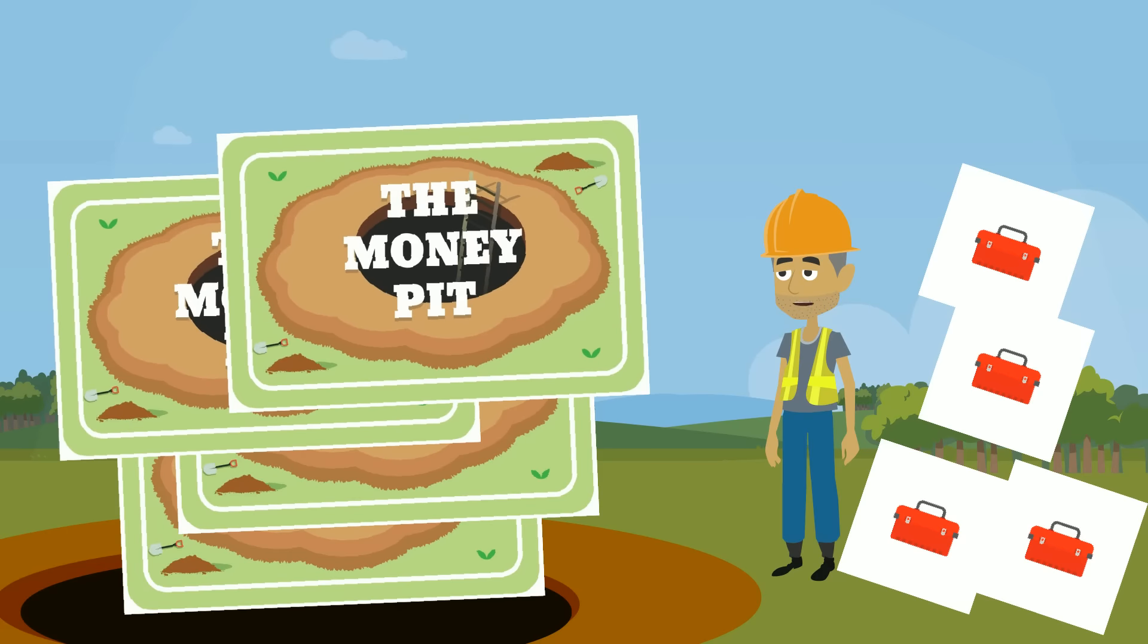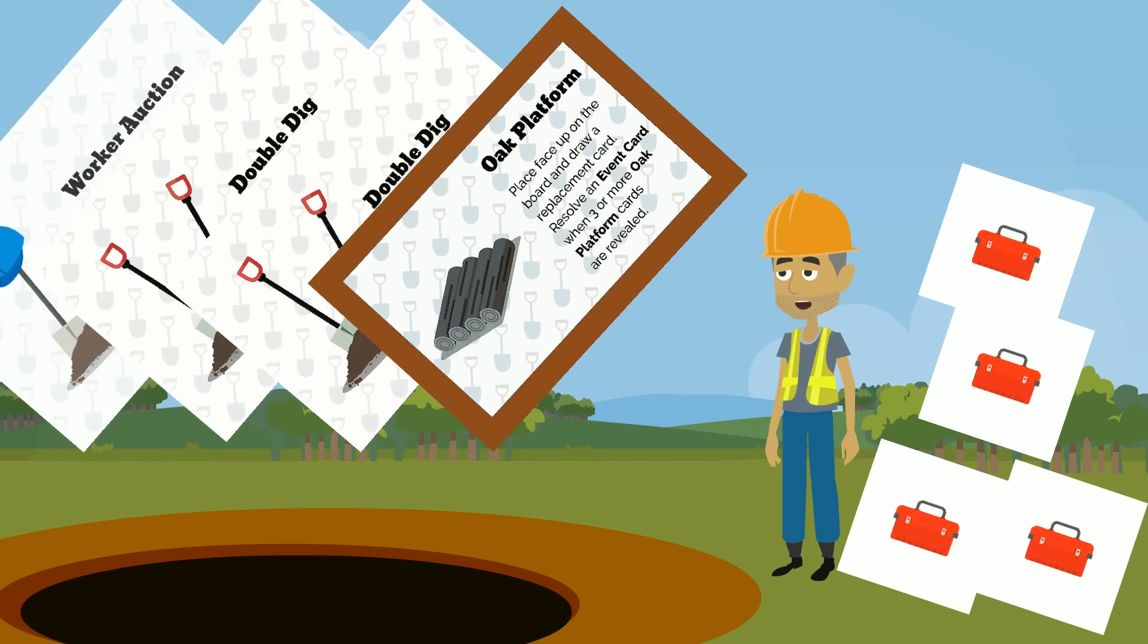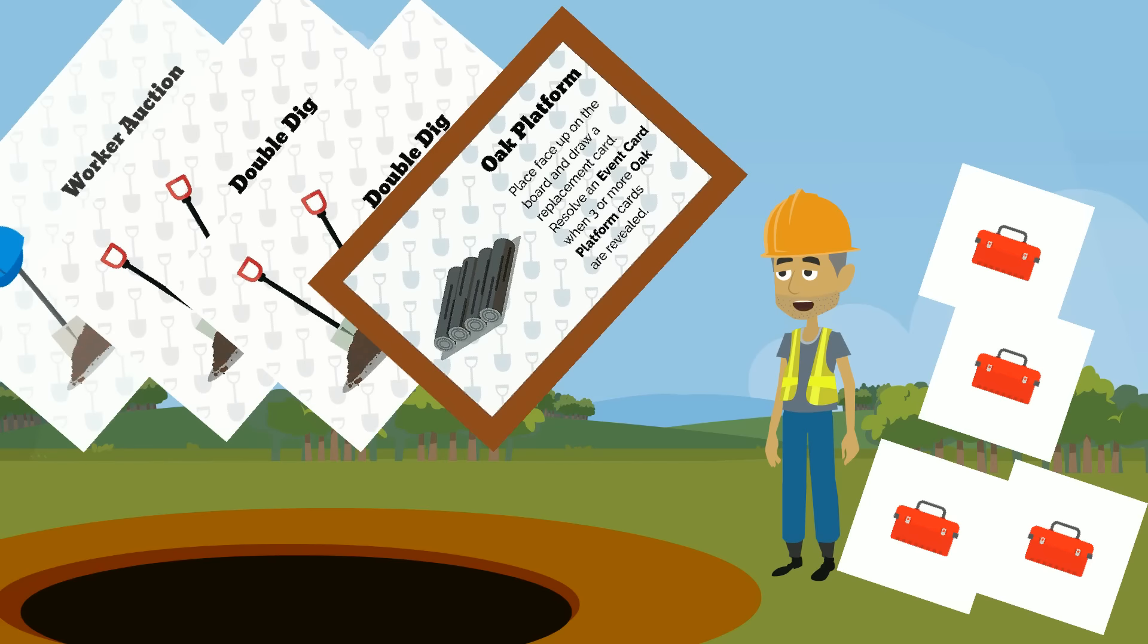Later in the game you may have 4 tool tokens, you will then draw 4 cards to start your turn. You can look at these cards now and in fact share the information with other players.